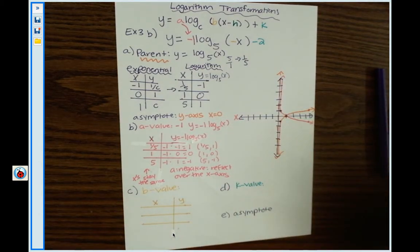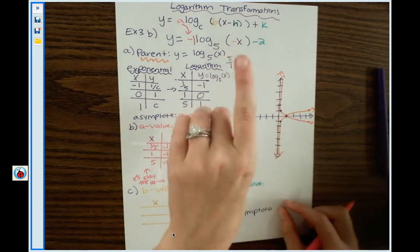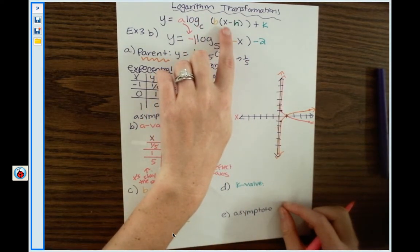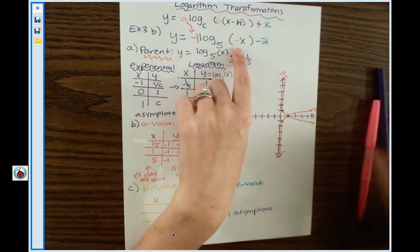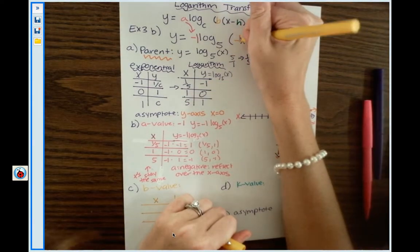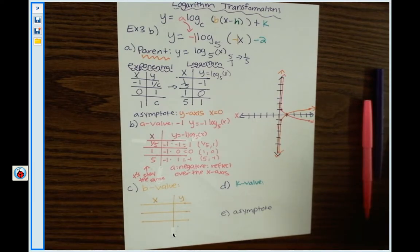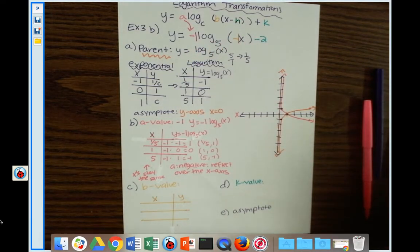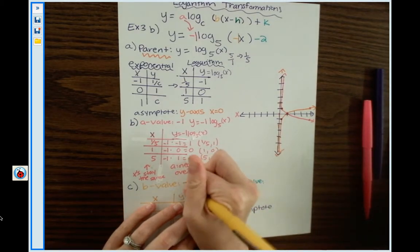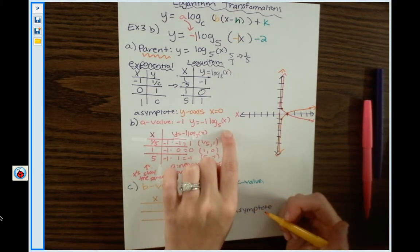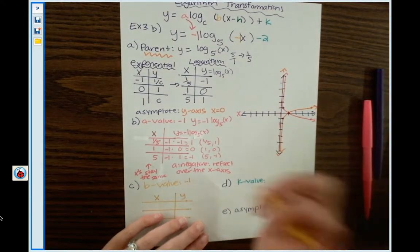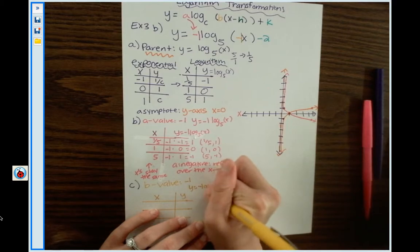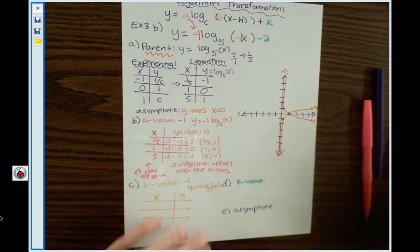Once you conquer the a, you have to conquer the b value before touching h or k. The b value is the number inside the parentheses that multiplies to x. Don't mix it up with the h value — h adds or subtracts; b multiplies. Looking at our original equation, I see a negative 1 in front of the x, so my b value is negative 1. The new equation becomes: y equals negative log base 5 of negative x.